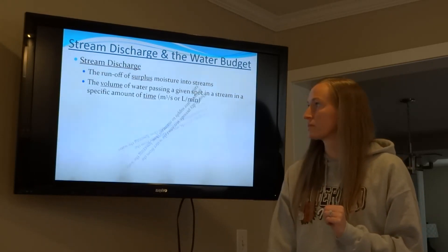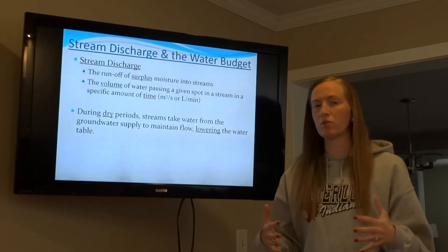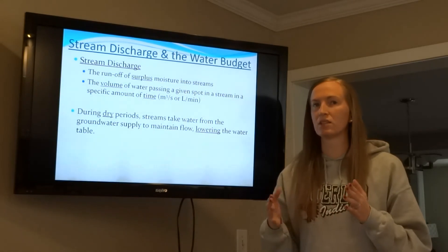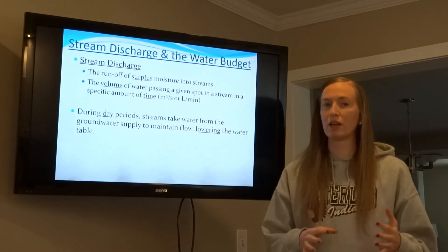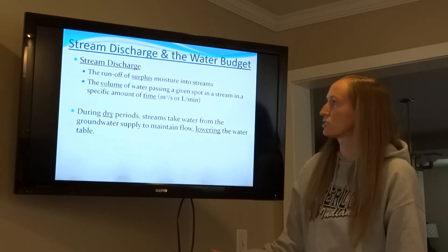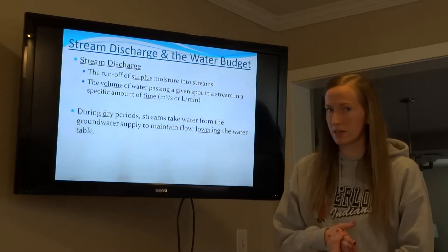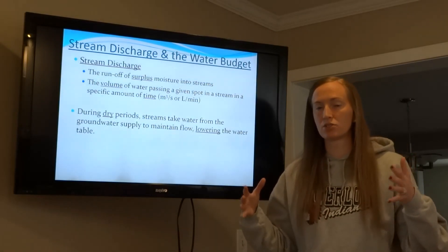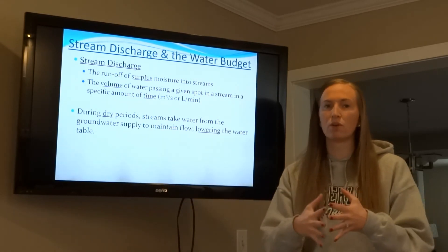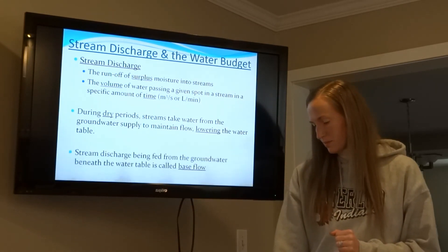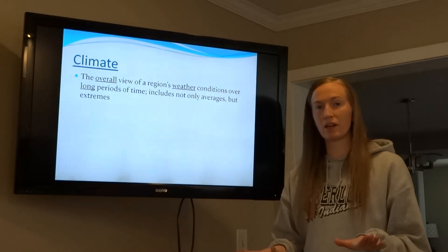Stream discharge refers to the volume of water passing through a stream. In springtime, with more rain and snowmelt, there is a greater stream discharge and the stream flows faster. During dry periods in summer, the stream still continues to flow because groundwater feeds into the running body of water. That brings us to climate, so this segment ends here.